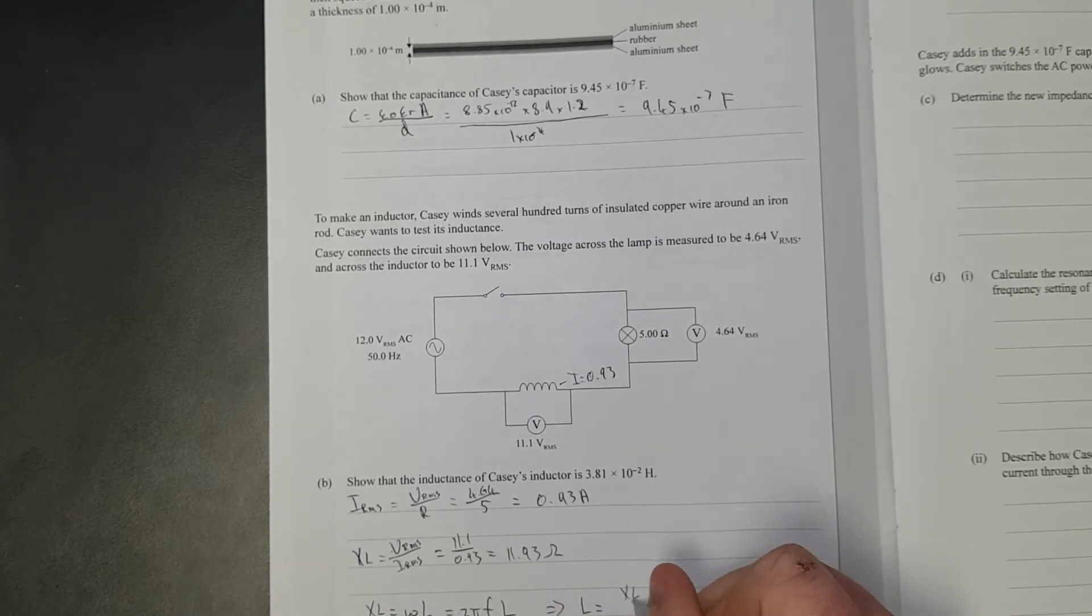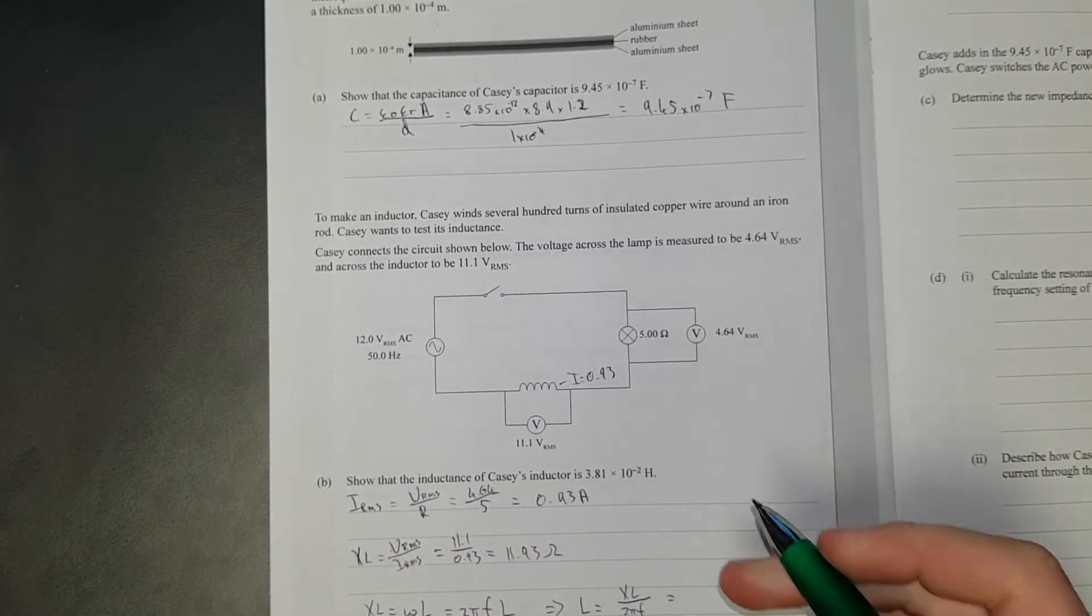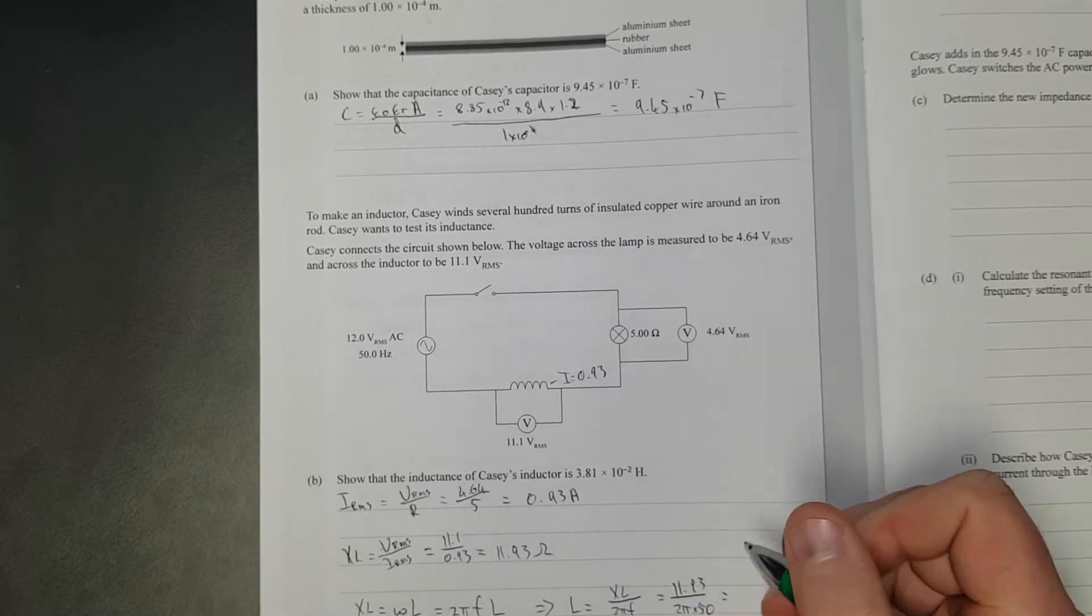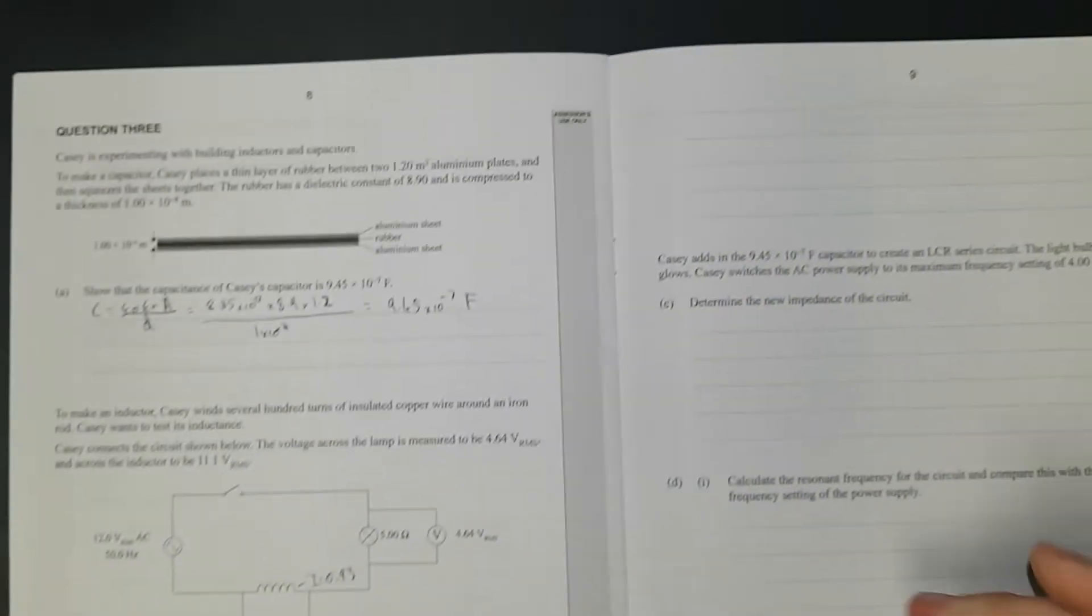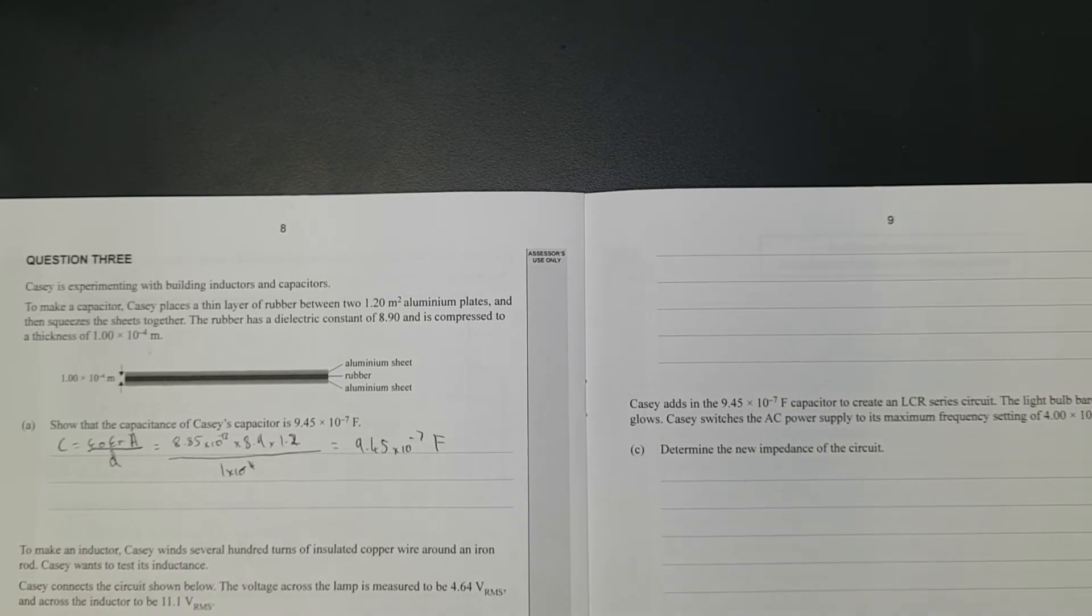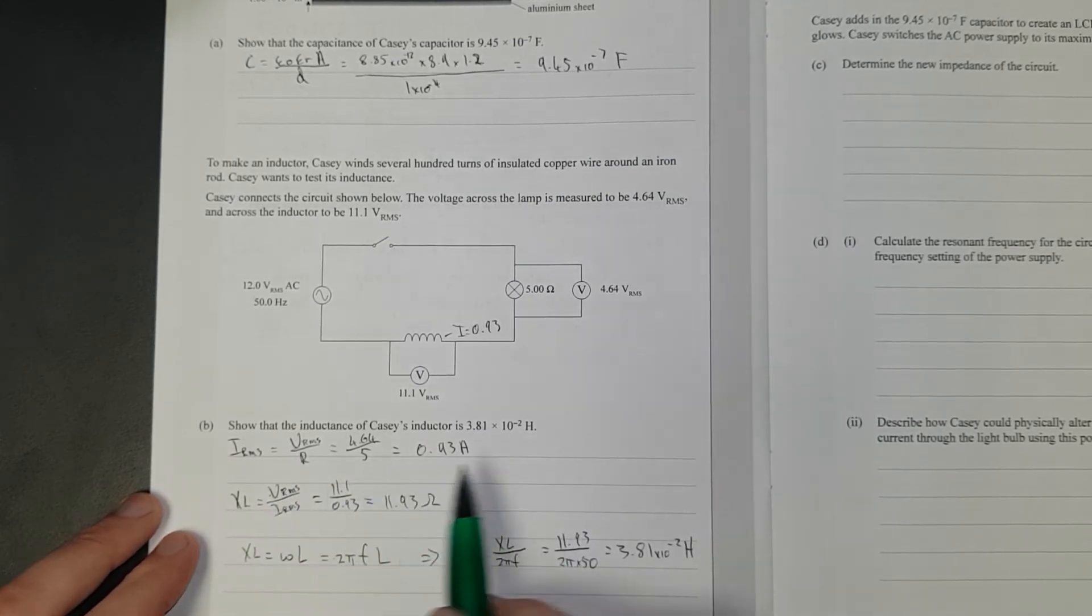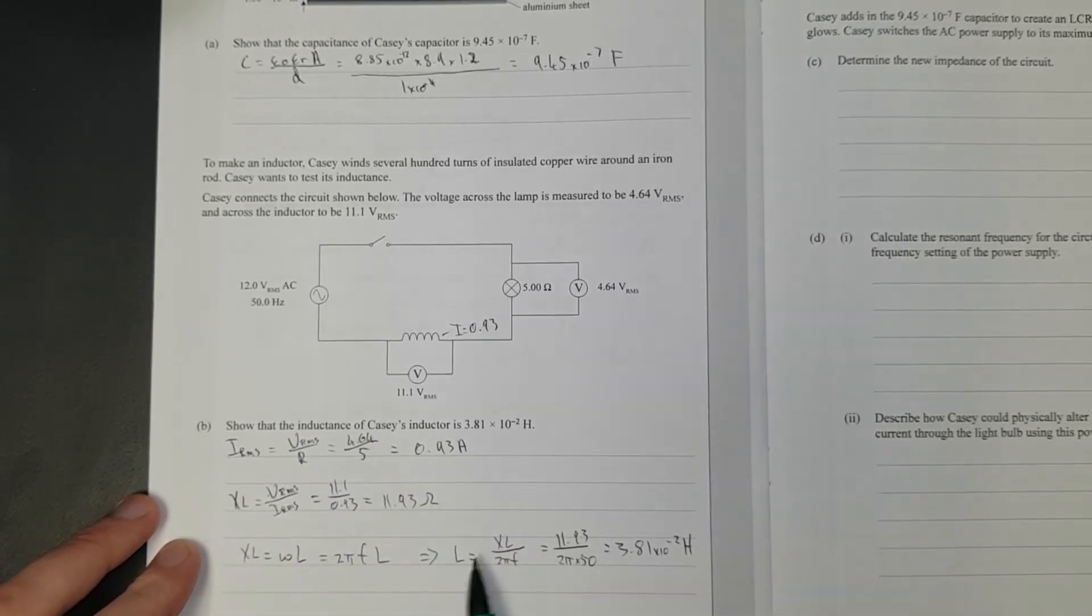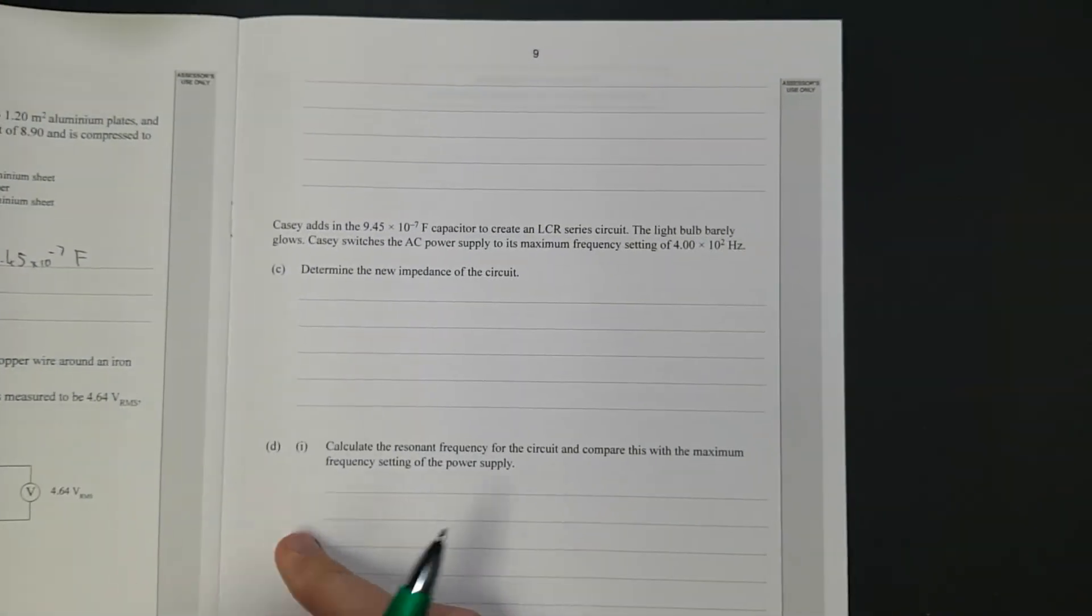It's getting kind of easy now. In your formula sheet you have the reactance of the inductor is equal to the angular frequency times the inductance, which is going to be equal to 2 pi f times L. In other words, L is equal to reactance divided by 2 pi f. What's frequency? 50. Which means 11.93 divided by 2 pi times 50, and that just so happens to be 3.81 times 10 to the negative 2 henries. And we didn't even need the space up there. I hate when exams have a bit of space there and a bit of space there.